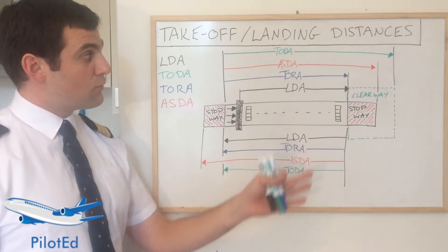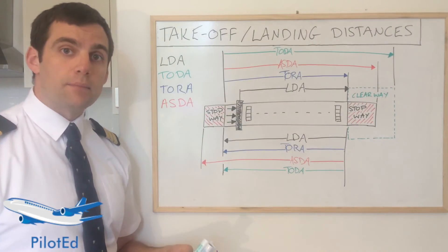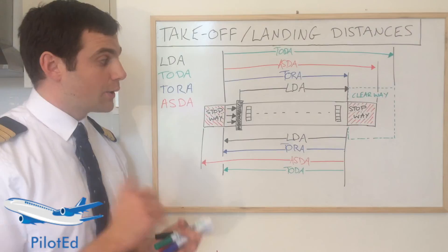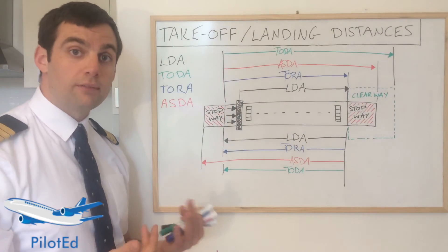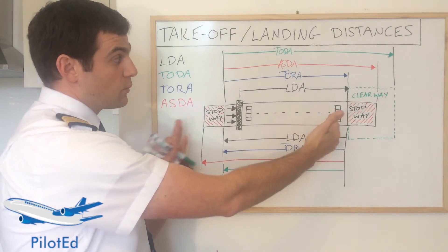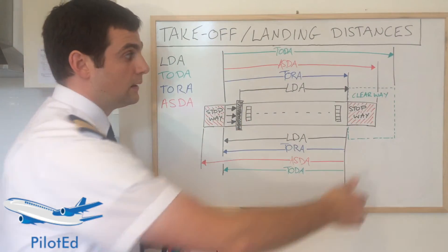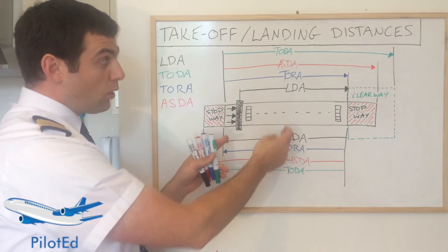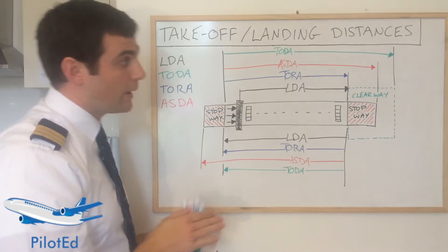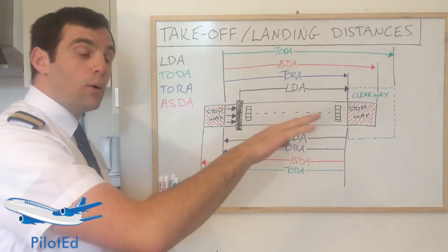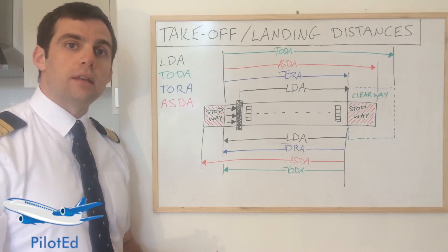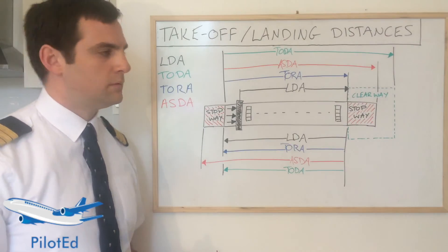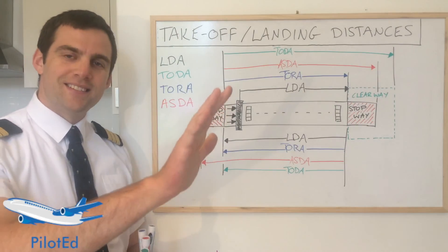On the topic of takeoffs, one way around performance limitations is the use of flaps. With a clean configuration or less flap, we have a longer takeoff roll but a steeper climb-out due to less drag. If we're performance-limited by runway length, we can use a higher flap setting to shorten the takeoff roll. If we have a clearway, we can use a higher flap setting so the takeoff roll fits on the runway, with the shallower initial climb-out using the clearway. So: TODA, ASDA, TORA, and LDA — I hope that's cleared it up. All the best and until next time.